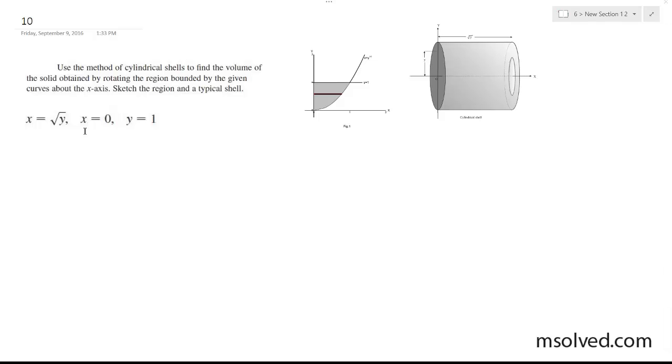Alright, so we want to define the volume using cylindrical shells. The height of this shell is the square root of y, so in this case the volume is going to be equal to, from 0 to 1. So we're wrapping this around the x-axis.